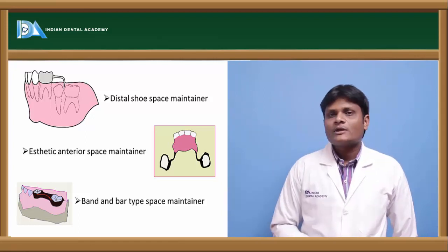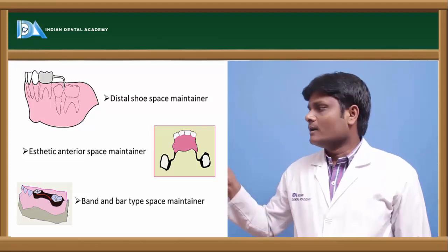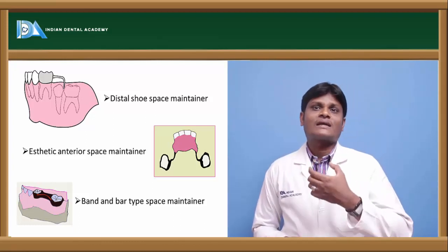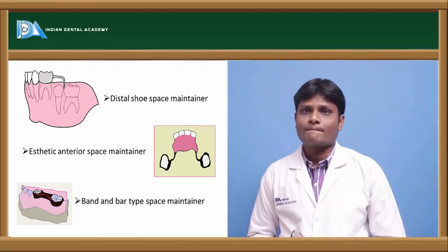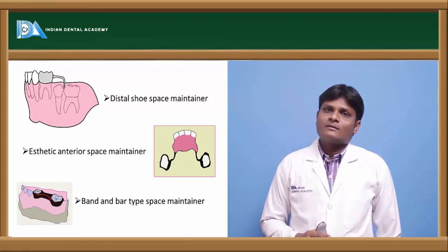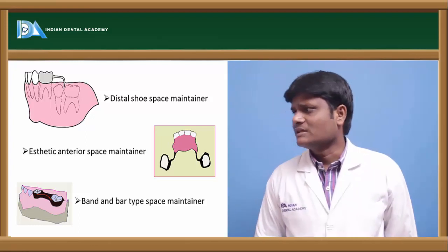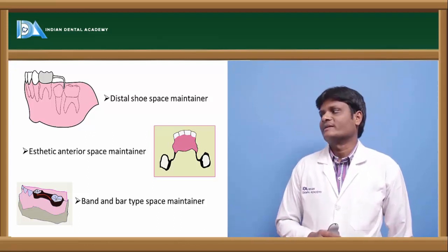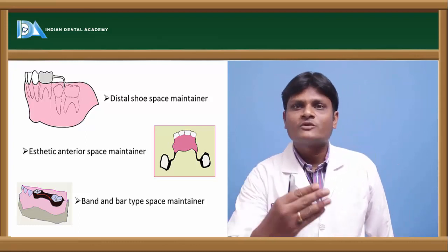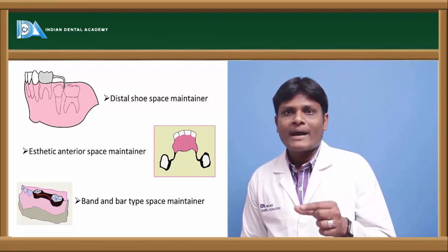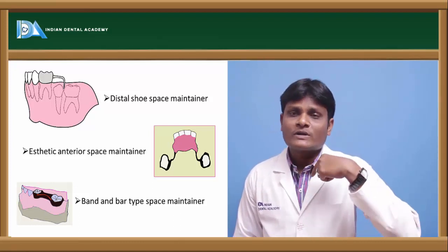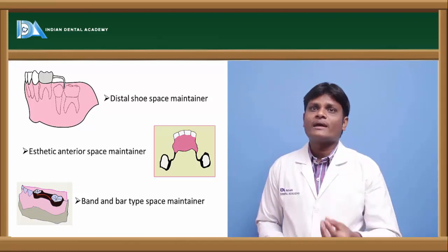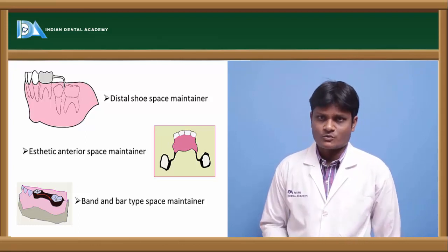The aesthetic anterior space maintainer is similar to a lingual arch but the anterior portion carries acrylic teeth attached to the fixed space maintainer. It is used in cases of prematurely missing deciduous anteriors. Another type is the band and bar space maintainer — bands are placed on the teeth mesial and distal to the edentulous area, and a metal rod is soldered spanning the exfoliation space, preserving the space and allowing room for the erupting permanent succedaneous tooth.